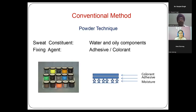The most common technique used all over is the powder method. The powder fixes the moisture and oily components — oily meaning smaller organic molecules with low molecular weight. The technique is based on the premise of double adsorption — adsorption meaning absorption only on the surface. It has two broad components: an adhesive and a colorant. The adhesive gets adhered to the sweat residue, and the colorant gets adhered to the adhesive. Because of the color, the fingerprint becomes visible.